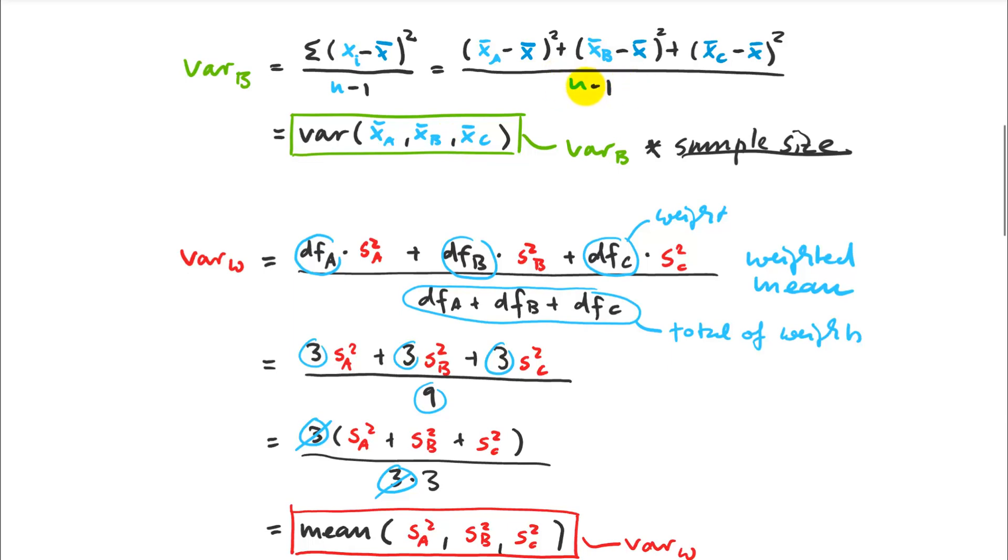So the degree of freedom here is n minus one, but the n is actually the number of treatments, so it's actually t minus one if you call the number of treatments t, which you usually do by convention. And then for the pooled variance within, we have a total number of samples which is 4 times 3 varieties, is 12.